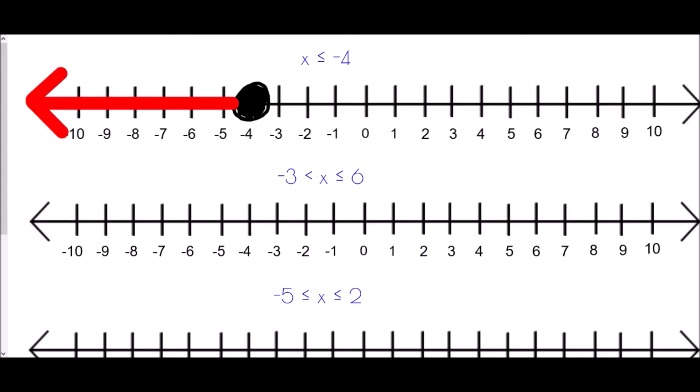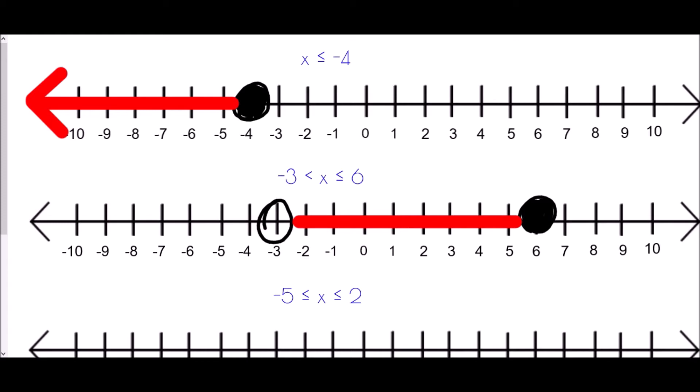The final two examples show a double inequality, meaning x is within a range of values. We're given negative three and six. We check which has an equal sign — only the six — so that circle is colored in. This tells us that x is between those two values: negative three is less than x, and x is less than or equal to six. We draw a line joining the two circles rather than an arrow, since x doesn't extend beyond those values.